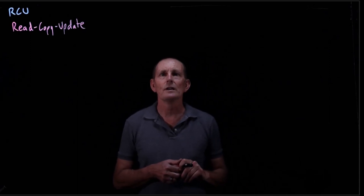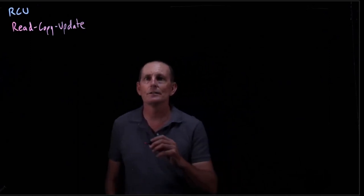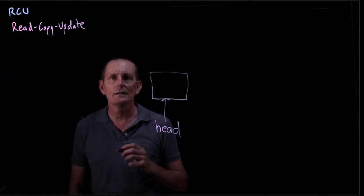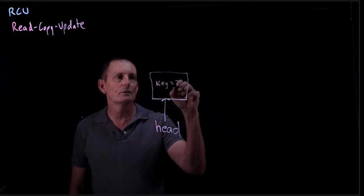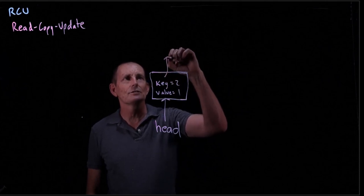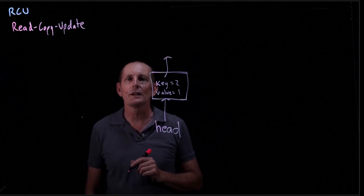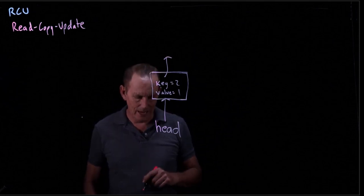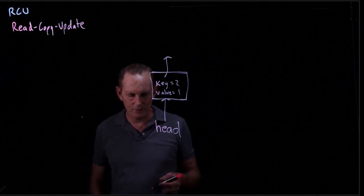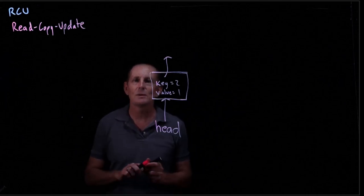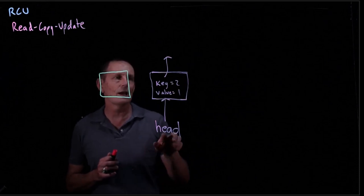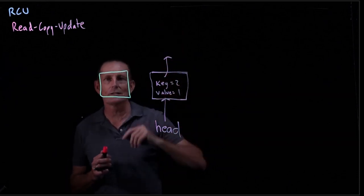Let's look at an example with a linked list. We have a head pointer that points to a node, and our nodes contain keys and values. Let's say the key is two and the value is one. This is our linked list. Now we're going to do an insert at the head of the list. We're going to do a malloc, which will allocate some space. At this point, we're not affecting any readers of the linked list — they can still go to the head, read it, get this item, go to the next.